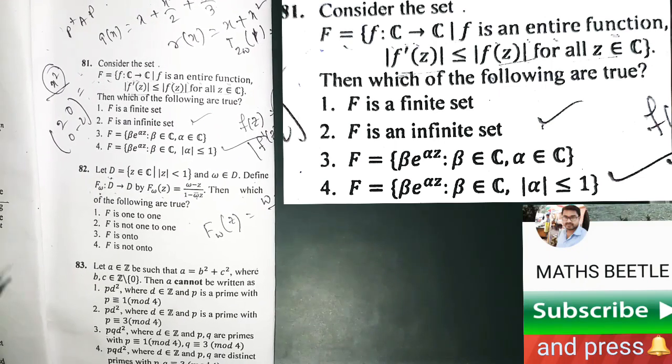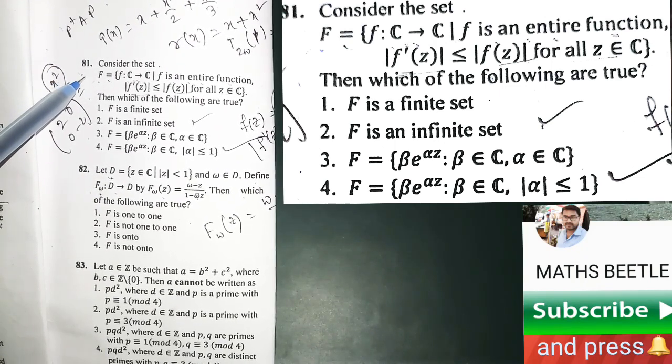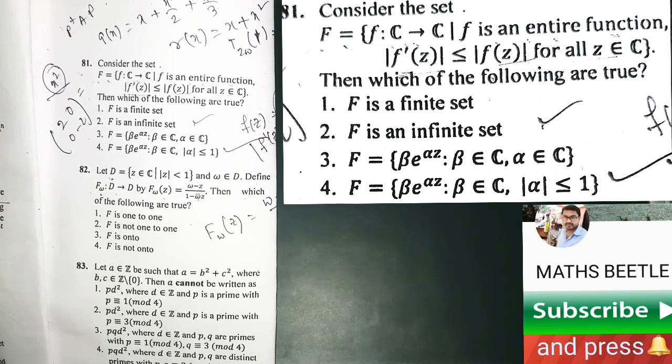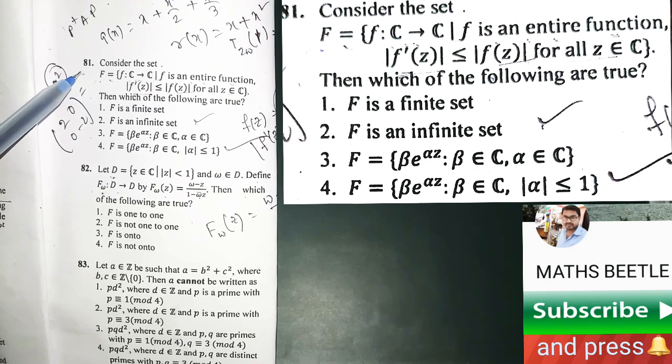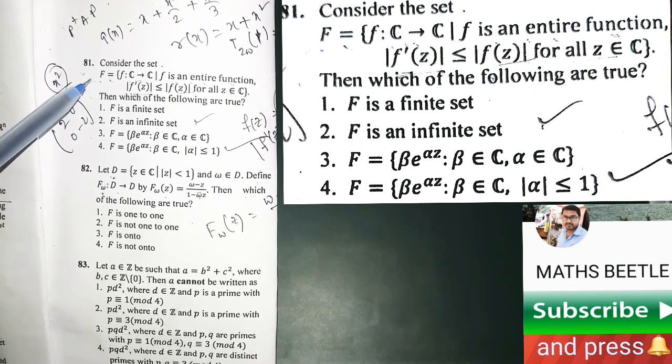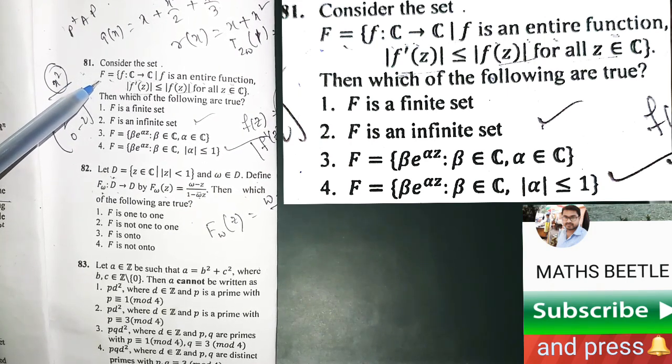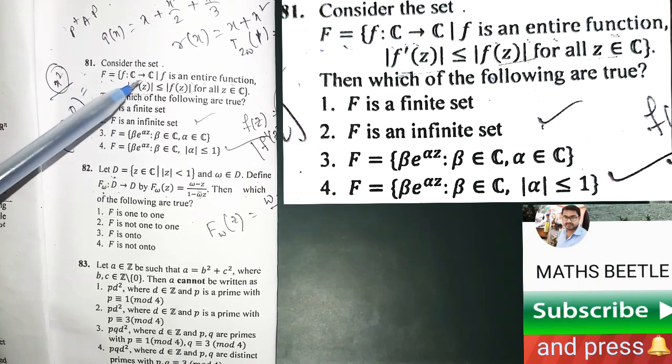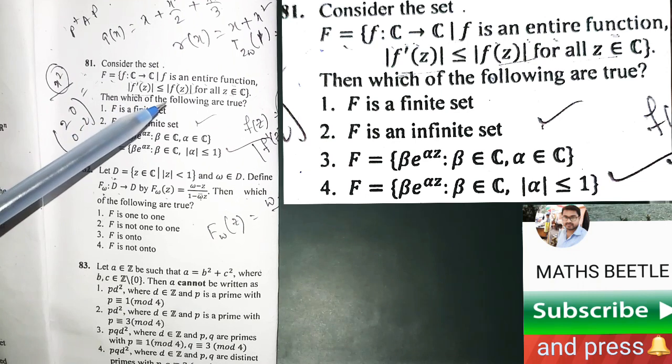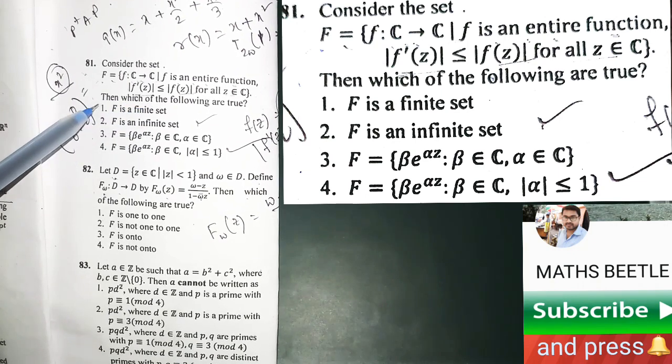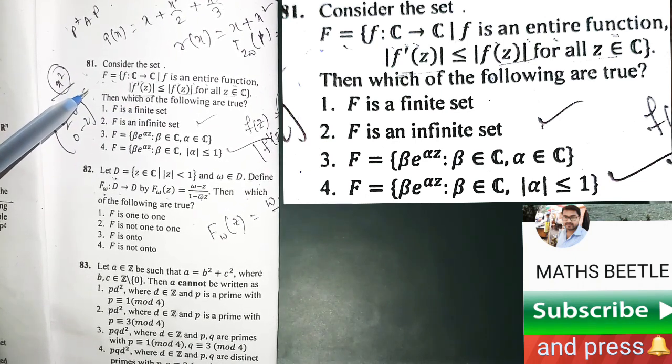Hello everyone, today we are going to solve this active problem number asked in CSIR NET June 2019. It's a problem from complex analysis where they have given us a set capital F, a set of entire functions, and a property of that function is also given to us.